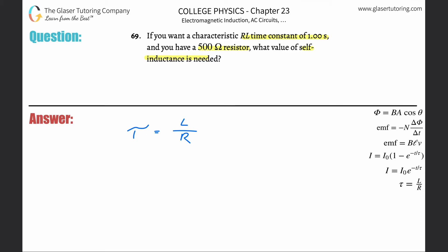If I want to find the self-inductance, just simply cross-multiply the time constant and the resistance. And that's as straightforward as it is. So the resistance here is 500, the time constant is one second. So we need a 500 Henry inductor.